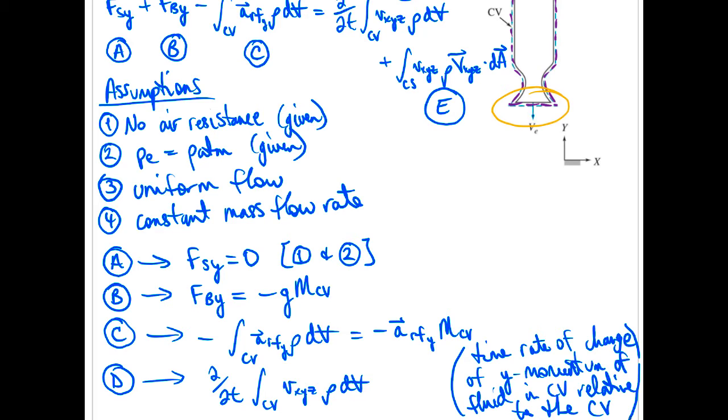and anything within the rocket. So I mean generally all the passengers, all the cargo, all that's strapped down securely to the rocket frame. So none of that stuff has any velocity relative to the reference frame. It's all moving at exactly the same velocity as the control volume. So none of that would have any y-momentum relative to the control volume,